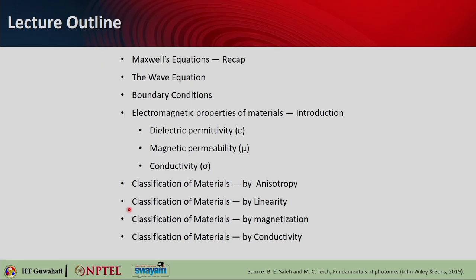Hello students, welcome to Lecture 5 of our online course on nanophotonics, plasmonics and metamaterials. Today's lecture is on electromagnetic properties of material. In this lecture we'll see a quick recap of Maxwell's equations, the derivation of the wave equation, and boundary conditions. We'll then introduce the electromagnetic properties of materials such as dielectric permittivity, magnetic permeability and conductivity, and look into the classification of materials by anisotropy, linearity, magnetization and conductivity.